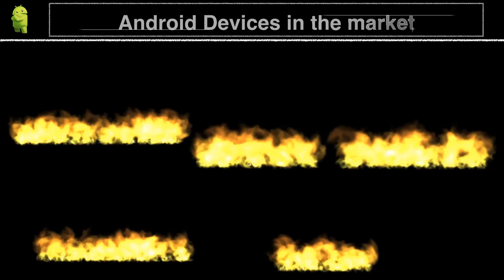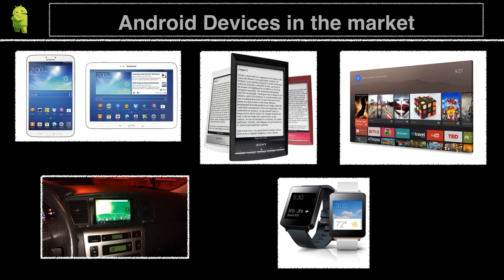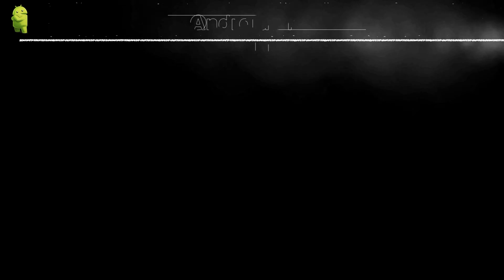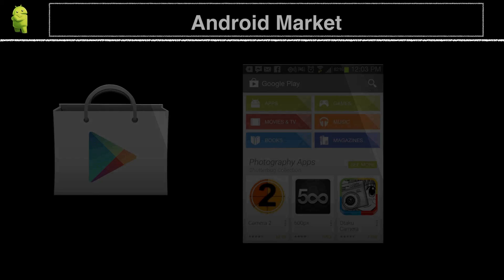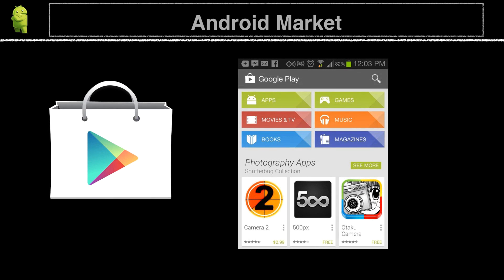Android devices come in all shapes and sizes, including smartphones, tablets, e-readers, smart televisions, cars, and smartwear like the smartwatch. Getting apps is very simple on Android — users can simply use the Google Play application pre-installed on their phone to directly download applications to their devices.